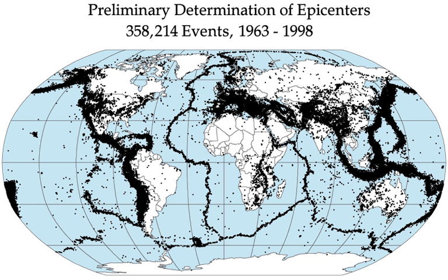Most earthquakes form part of a sequence, related to each other in terms of location and time. Most earthquake clusters consist of small tremors that cause little to no damage, but there is a theory that earthquakes can recur in a regular pattern. An aftershock is an earthquake that occurs after a previous earthquake, the main shock. An aftershock is in the same region of the main shock but always of a smaller magnitude. If an aftershock is larger than the main shock, the aftershock is re-designated as the main shock and the original main shock is re-designated as a foreshock. Aftershocks are formed as the crust around the displaced fault plane adjusts to the effects of the main shock.